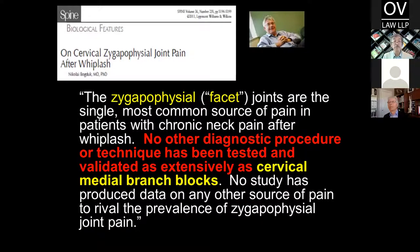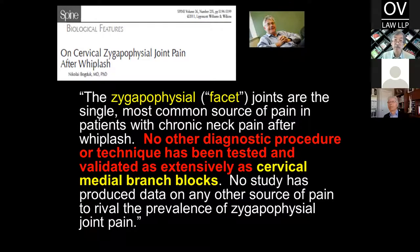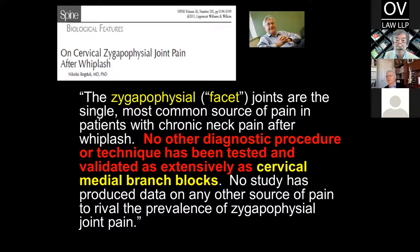Based on all the published research, Dr. Bogduk reviewed all the literature and concluded that the zygapophysial joints — also known as the facet joints — are the single most common source of pain in patients with chronic neck pain after whiplash. No other diagnostic procedure or technique — like CT scans, MRI scans, or any other imaging study — has been tested and validated as extensively as cervical medial branch blocks. No study has produced data on any other source of pain to rival the prevalence of facet joint pain. And with that I close, and I'll be around to answer some questions later on.